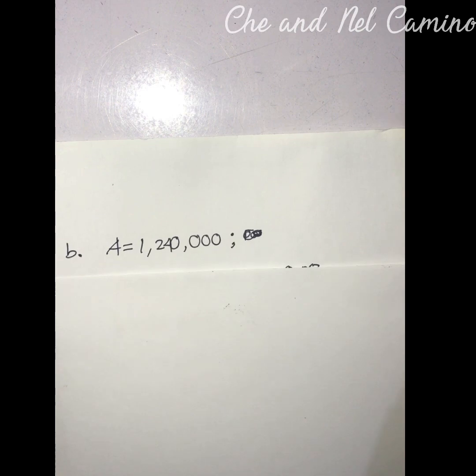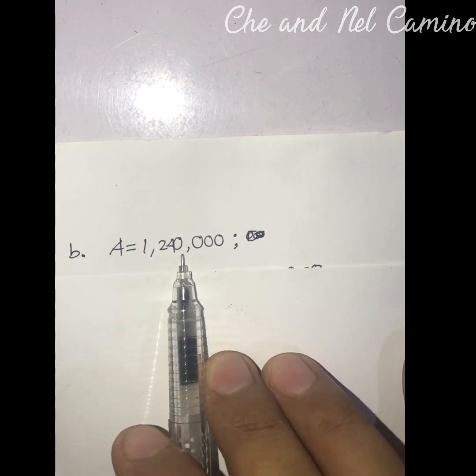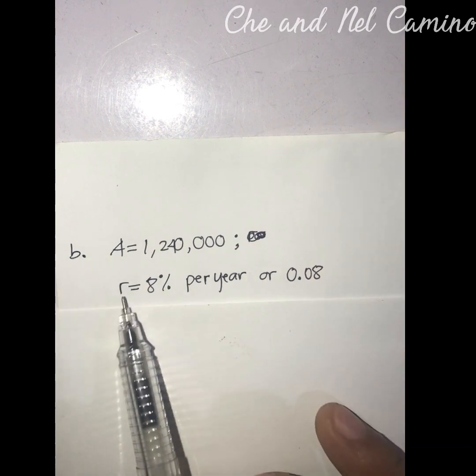In this video I am going to discuss exponential growth problems with one unknown variable, problem number two. In our problem number two or problem letter B, we have A is equal to 1,240,000.